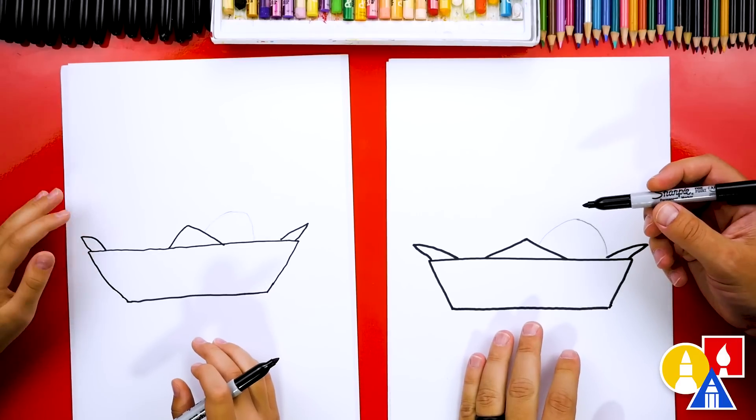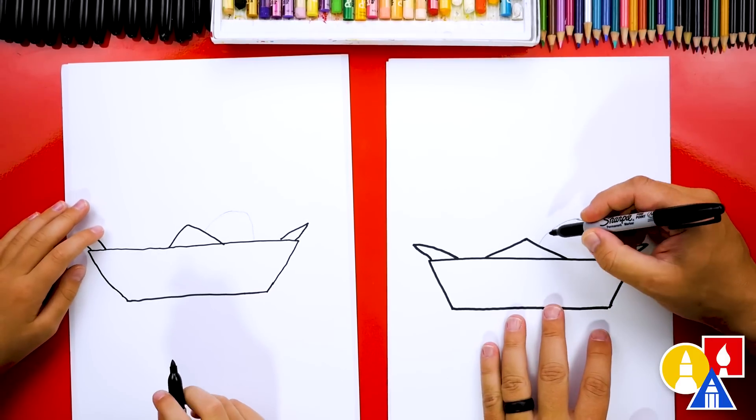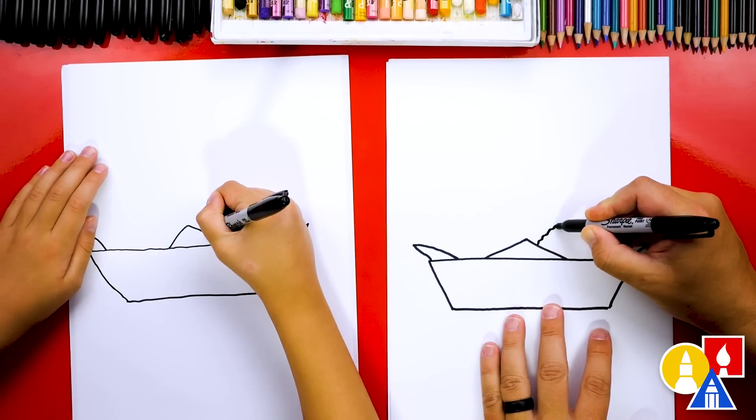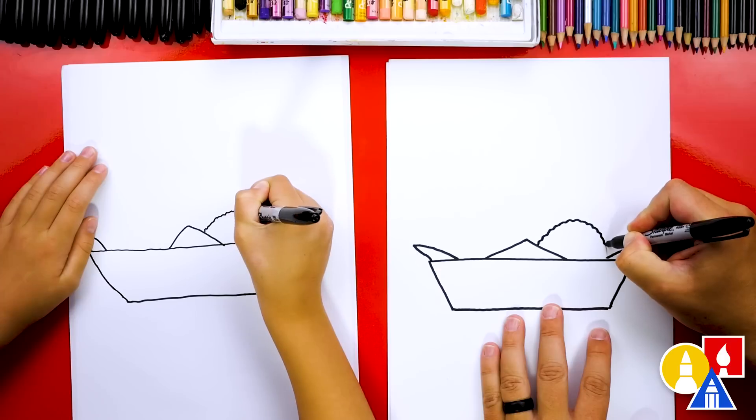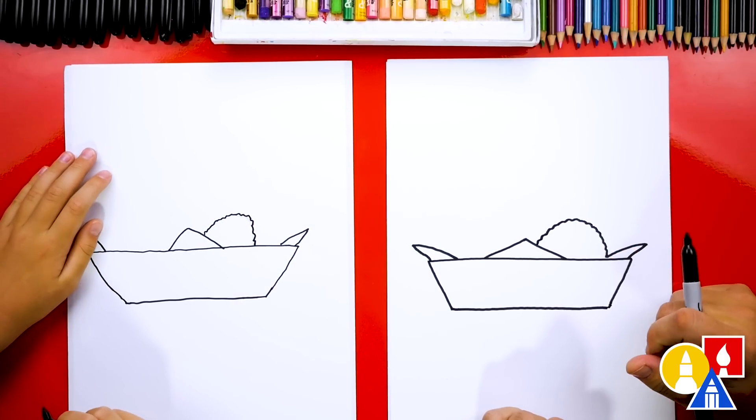Now we're ready to switch to our marker. And we're going to trace on top of the pencil. Except we're going to add texture to our onion ring. We're going to draw a bumpy line that follows that pencil line. Yes, just like that. That looks more like an onion ring.